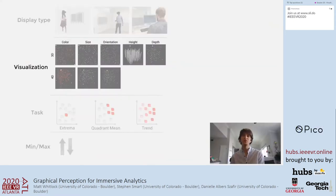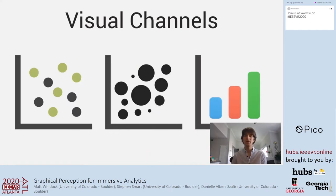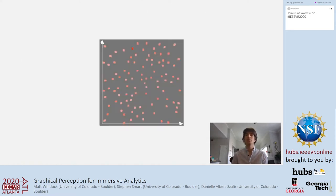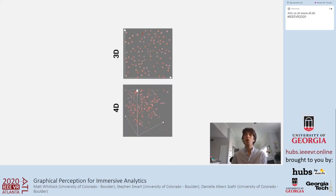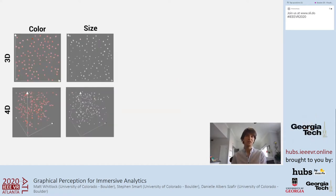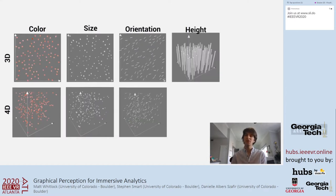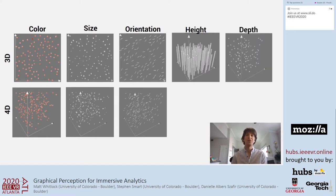We also considered different visualization designs, exploring five different visual channels as ways of representing data columns. We showed participants visualizations that have X, Y, and a third dimension encoded with color, or with a Z dimension and a fourth dimension for color. Other visualizations use size to encode data, some use orientation of lines, and we also tested bar charts that use height to encode data, and scatter plots that use depth where the further along the Z axis, the greater the value.